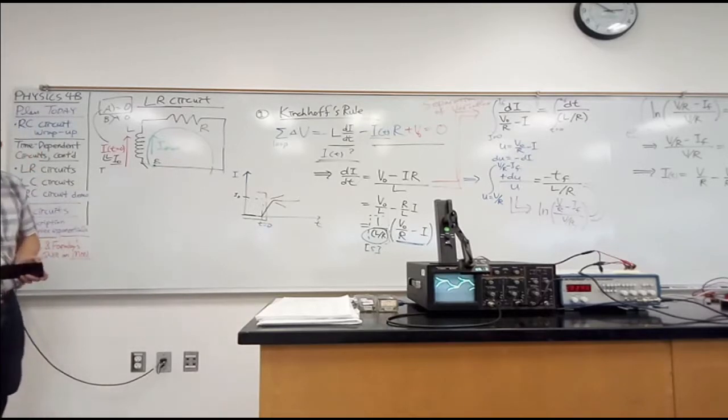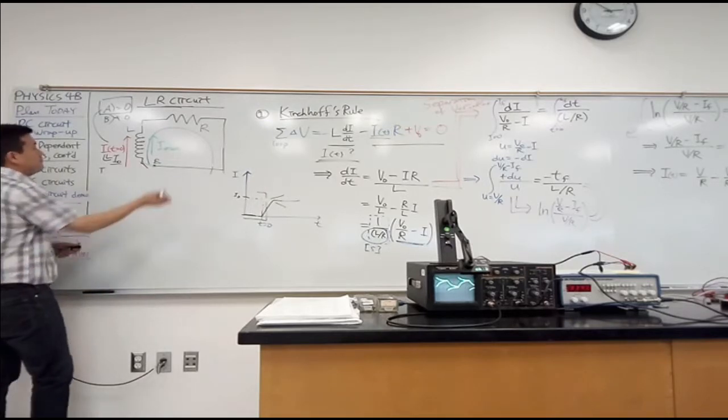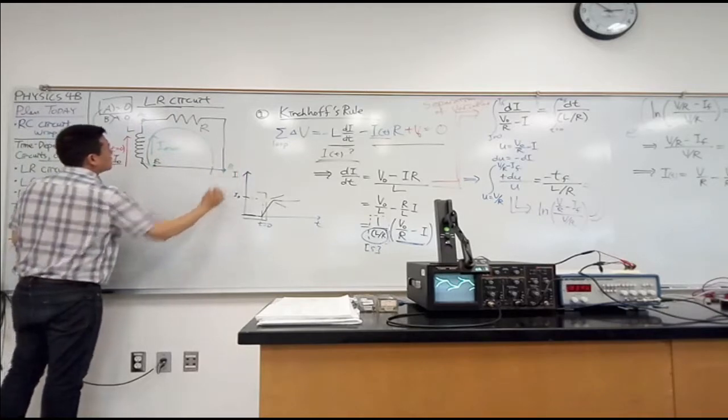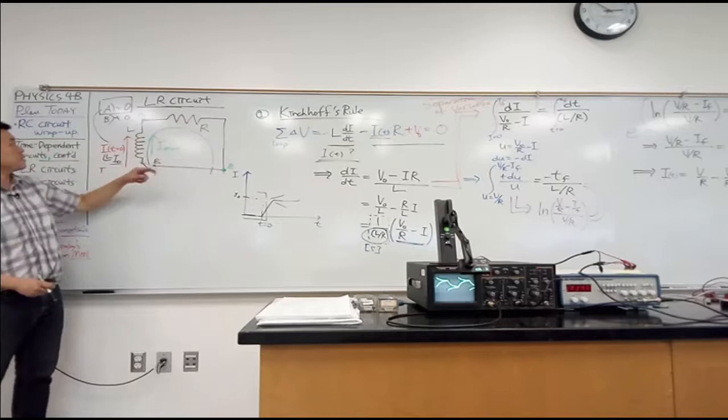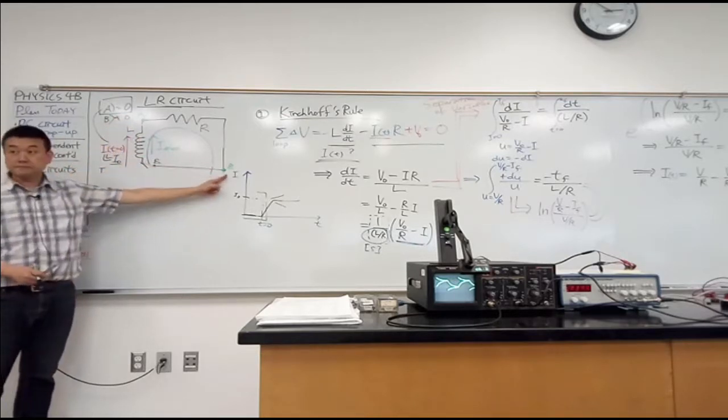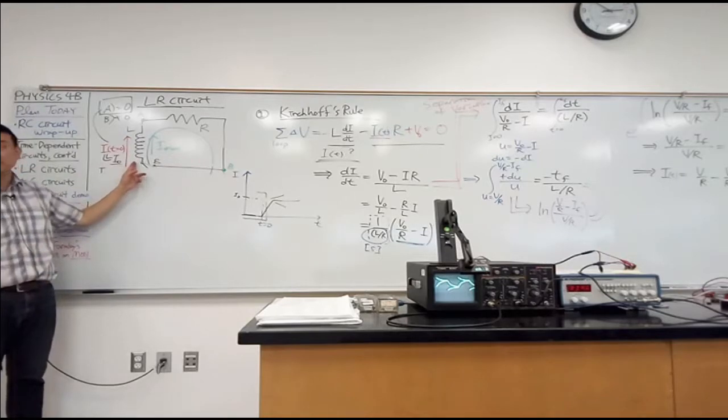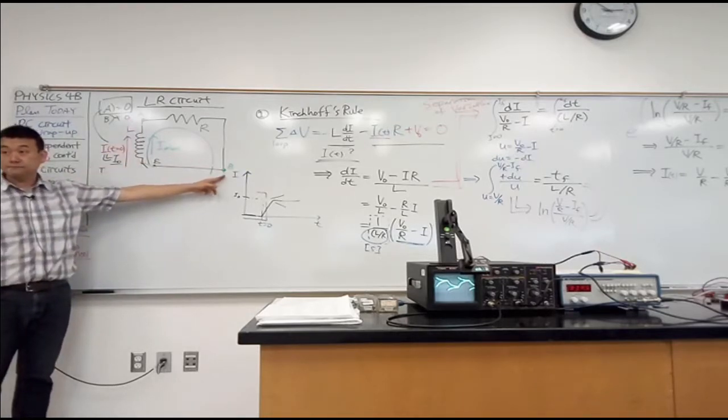Student: You're saying that the voltage drop across the resistor is the same as the voltage across the inductor because of Kirchhoff? Professor: Let me label some points. Point A and B. Can I say the voltage change across the resistor is voltage change from A to B? Okay? Can I also say voltage change across the inductor, just the absolute value, is the voltage change from A to B?